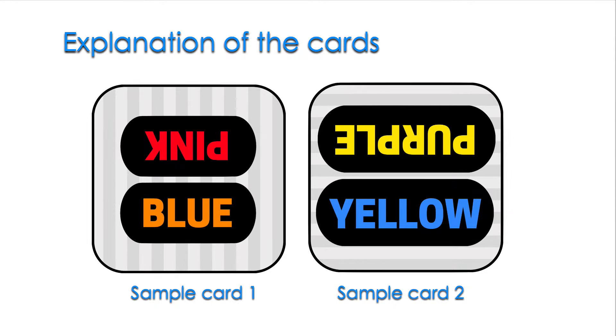And now for an explanation of the cards. All 30 cards include a color name and an opposing text color printed twice on each card, once right side up and once upside down. When playing, always focus on the word that is right side up at the bottom of the card.